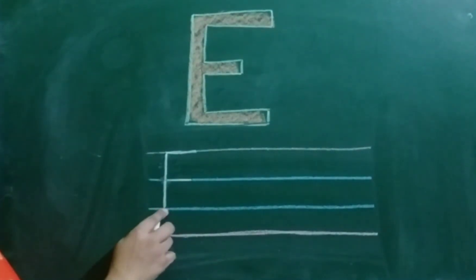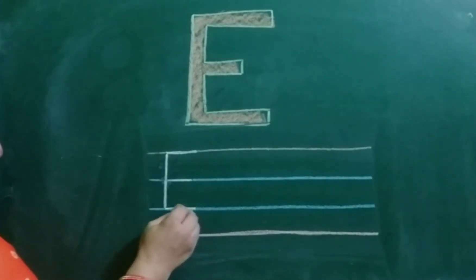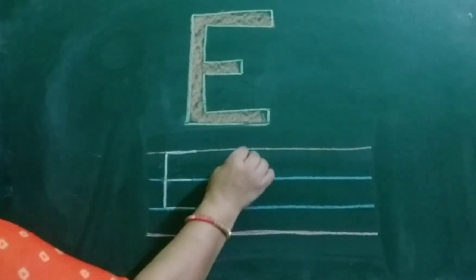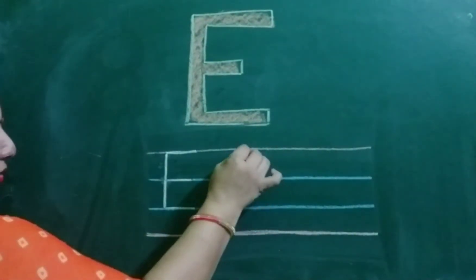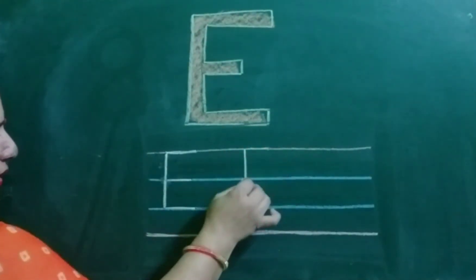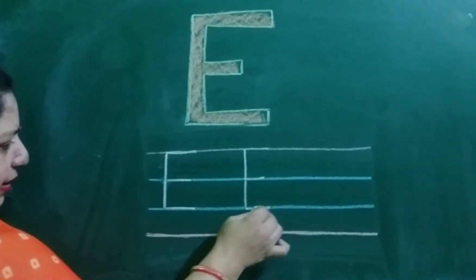Now keep your pencil on the third line. Draw one sleeping line to the right. Standing line, sleeping line, sleeping line and sleeping line.